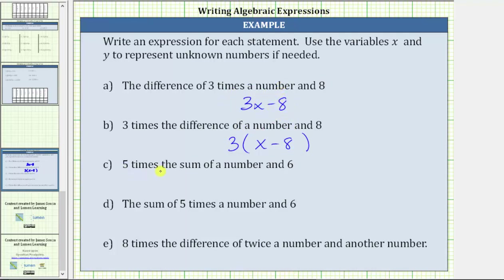For c, five times the sum of a number and six. This is similar to b. We're going to have five times a sum — sum means addition — so we'll have five, then in parentheses we'll have the sum. The sum of a number and six is x plus six, giving us five times the quantity x plus six.